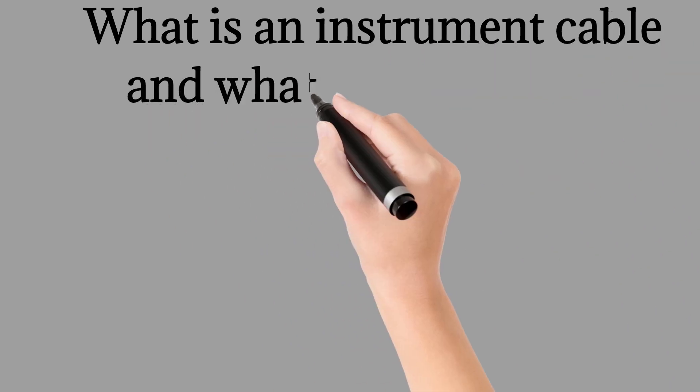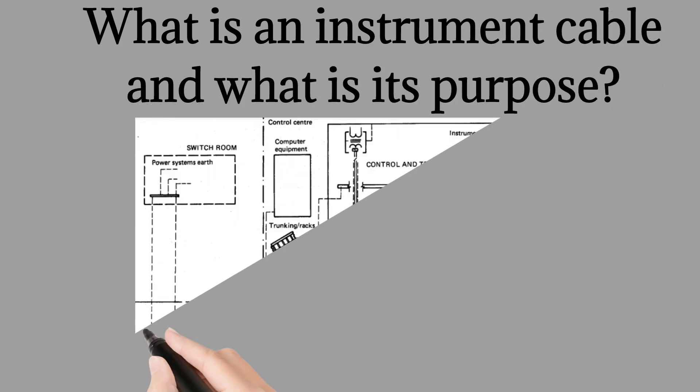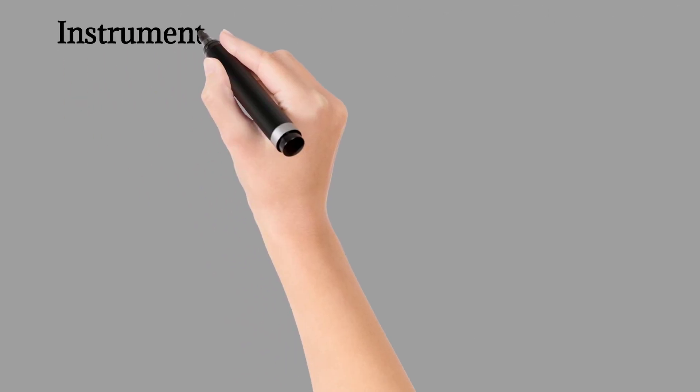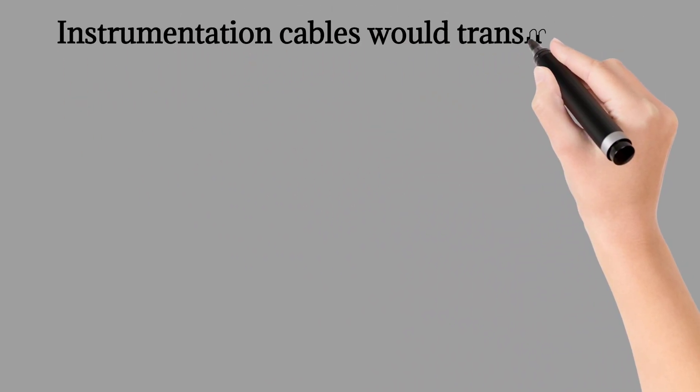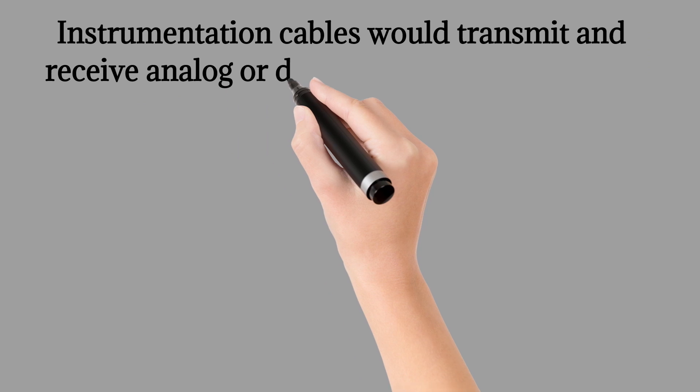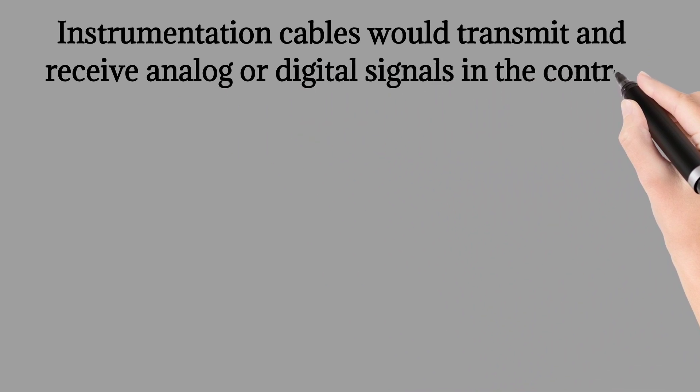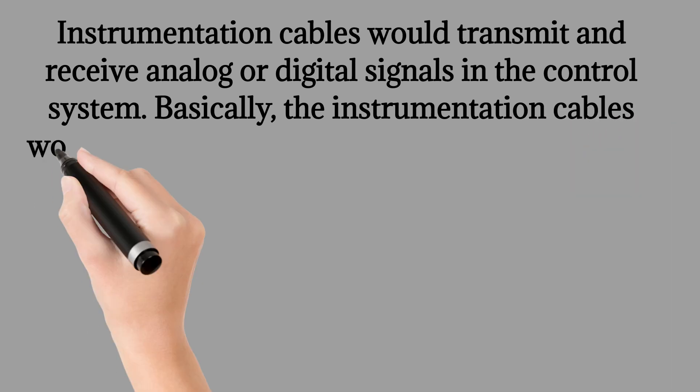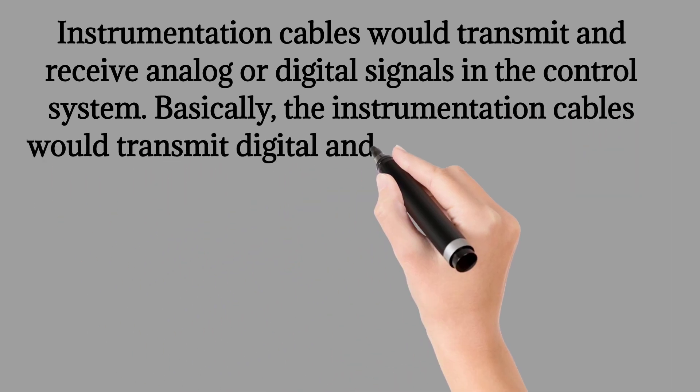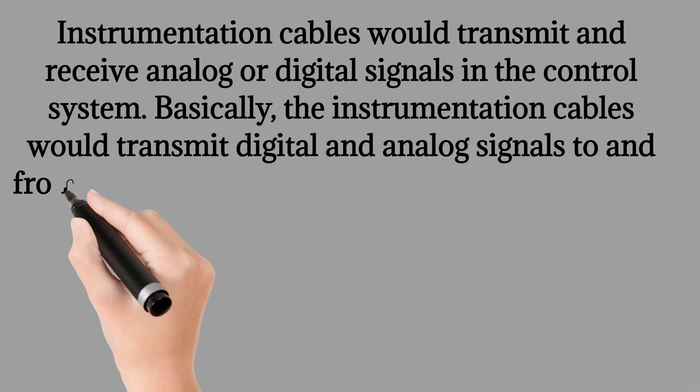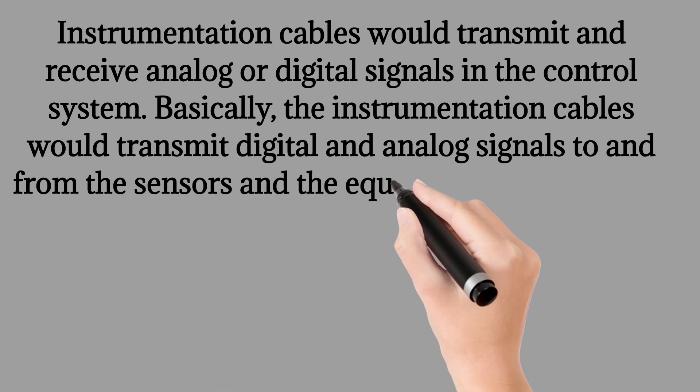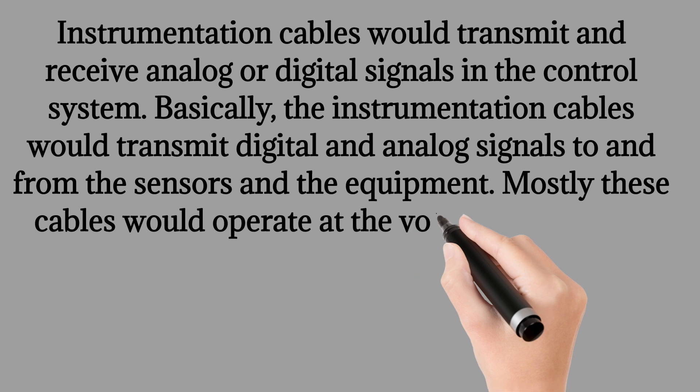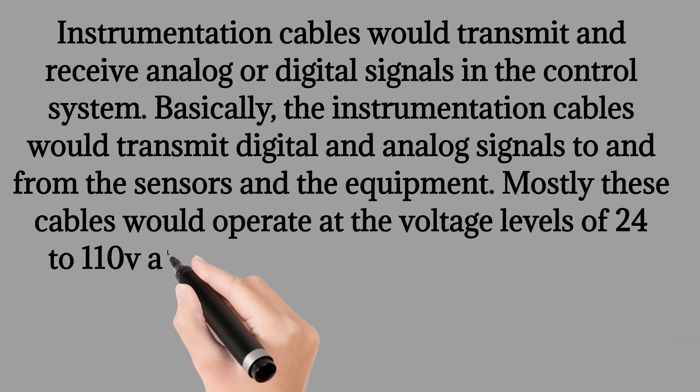What is an instrument cable and what is its purpose? Instrumentation cables would transmit and receive analog or digital signals in the control system. Basically the instrumentation cables would transmit digital and analog signals to and from the sensors and the equipment. Mostly these cables would operate at the voltage levels of 24 to 110 V at 4 to 20 mA current rating.